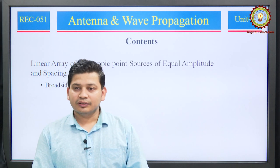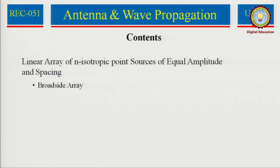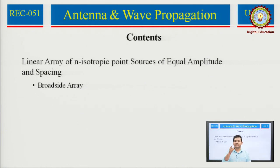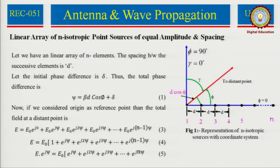First, understand why we are going towards n point sources: because there are n number of sources available in free space from where we can receive a signal. It is important which type of signal is intended towards the receiver, but sometimes your receiver may receive a different signal which is not intended towards it, and that acts as noise. Let us begin with: linear array of anisotropic point sources of equal amplitude and spacing.